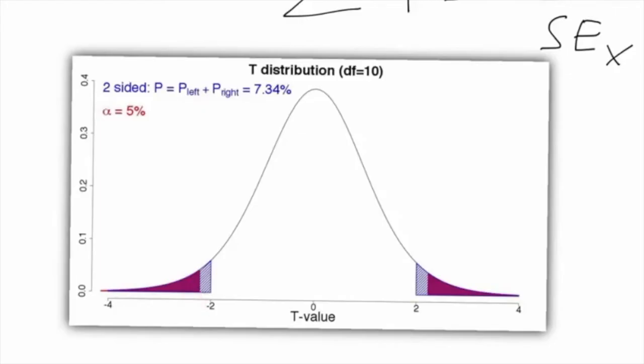However, if we choose to test one-sided, we are not actually interested in two t-values, but only in one, either the left or the right value.